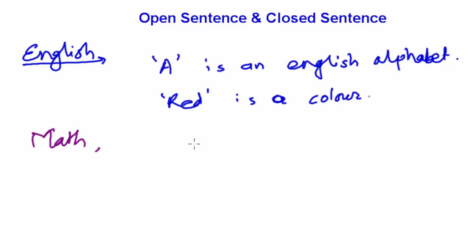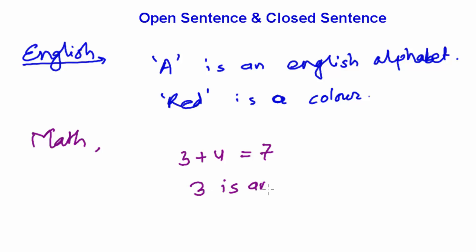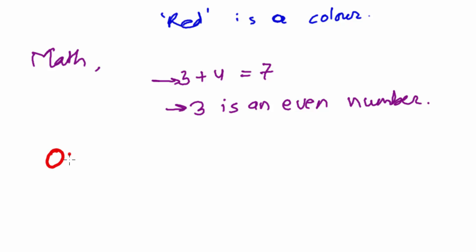In math, you can say 'three plus four equals seven' — this is a math sentence. Or you can say 'three is an even number.' These are examples of math sentences.